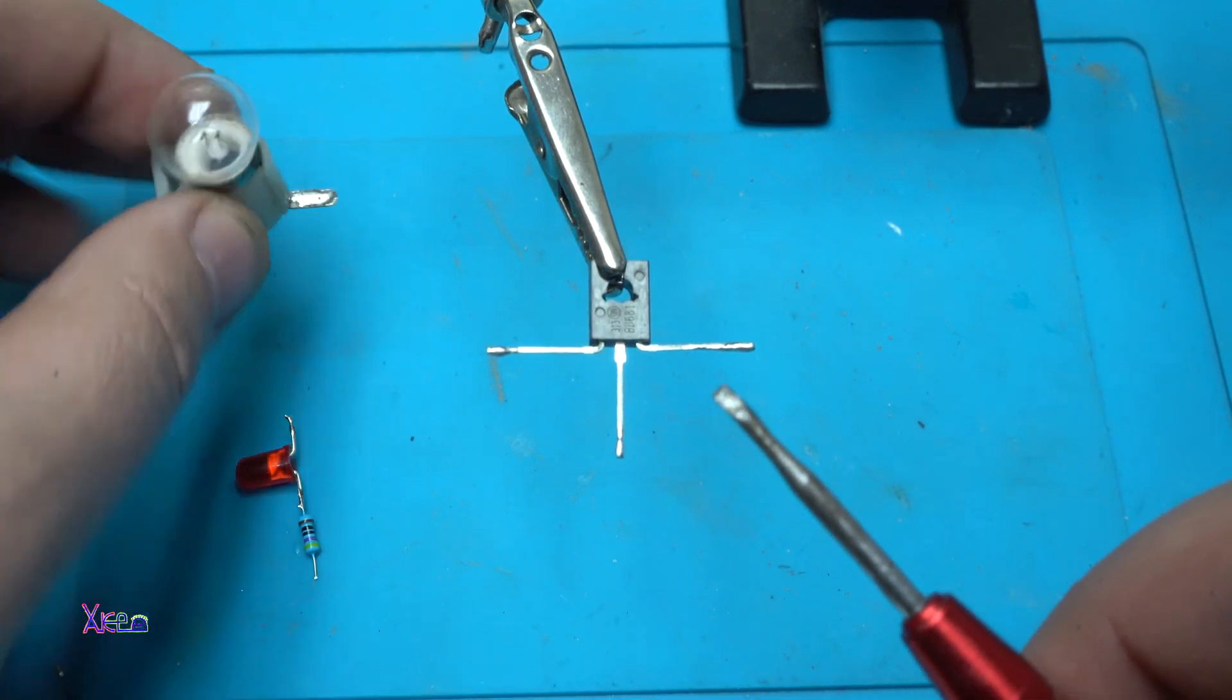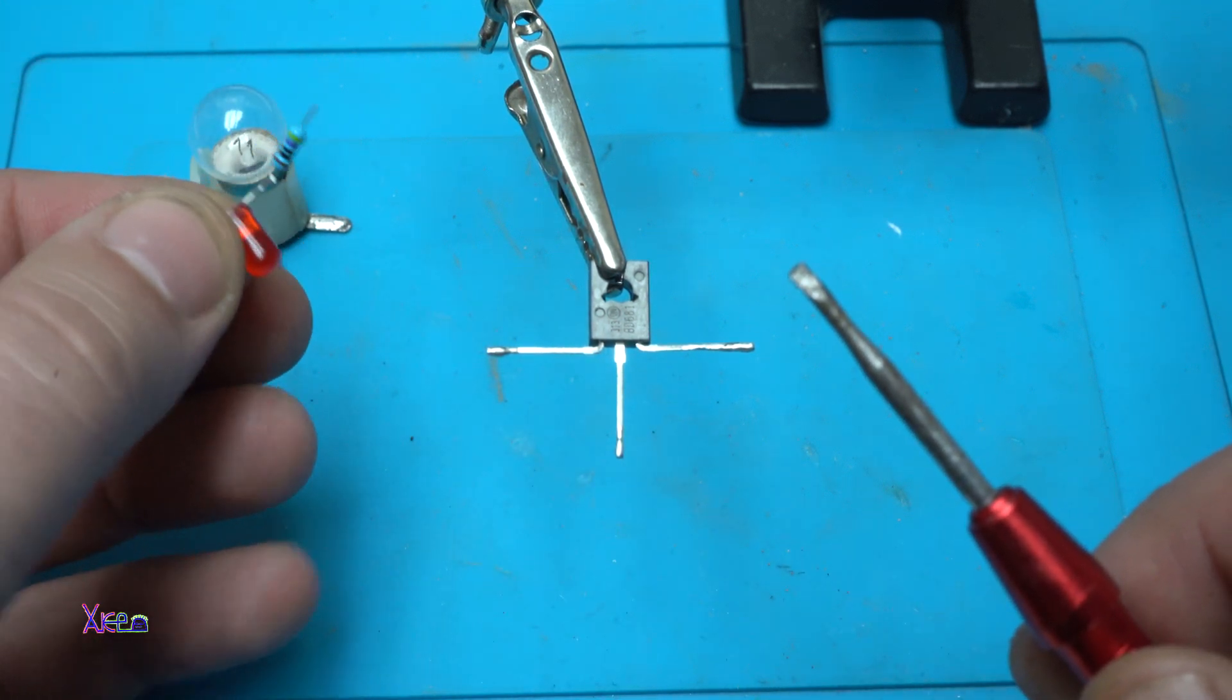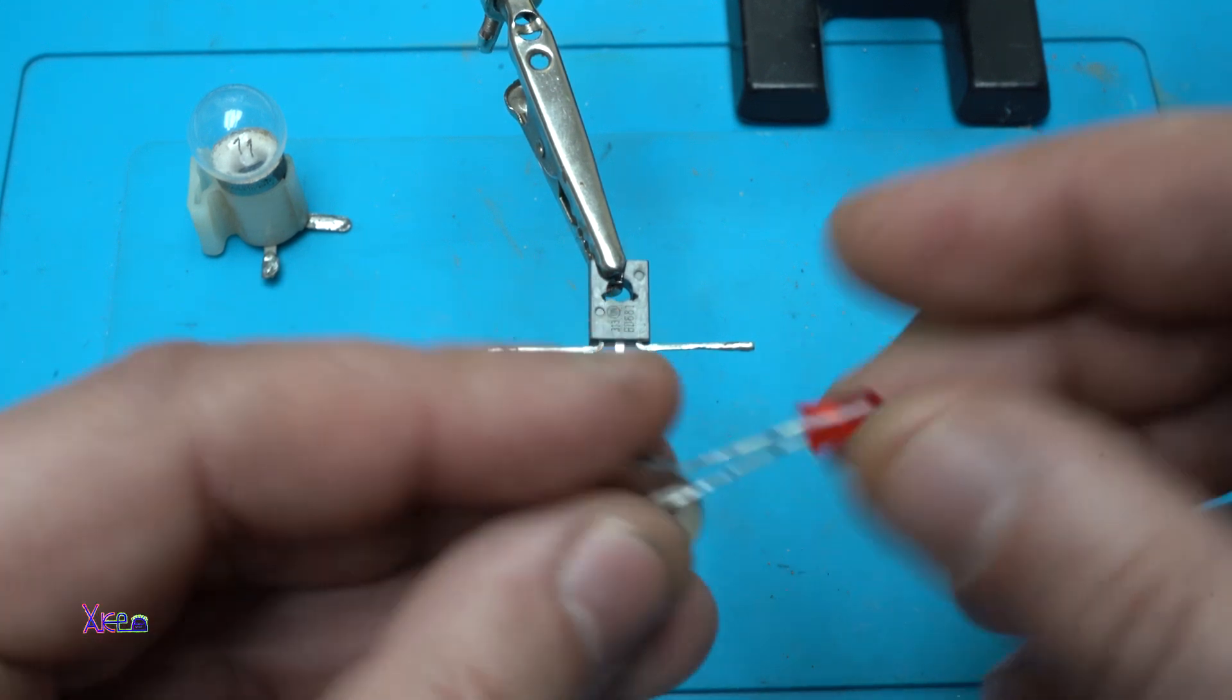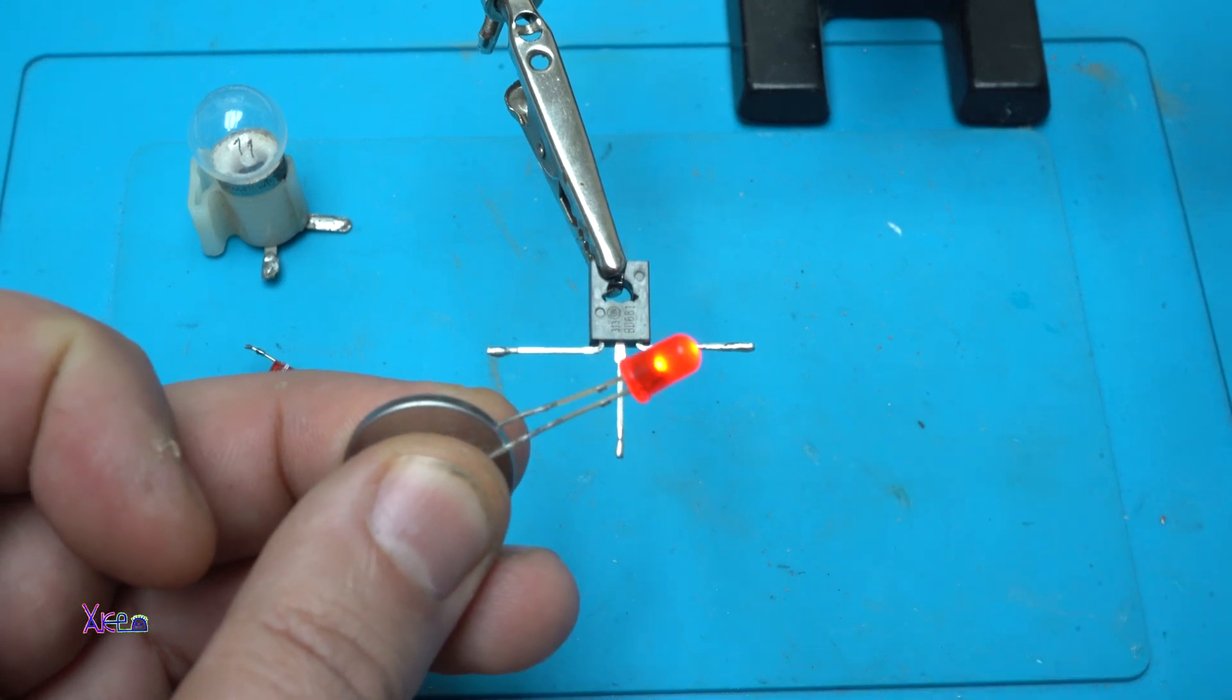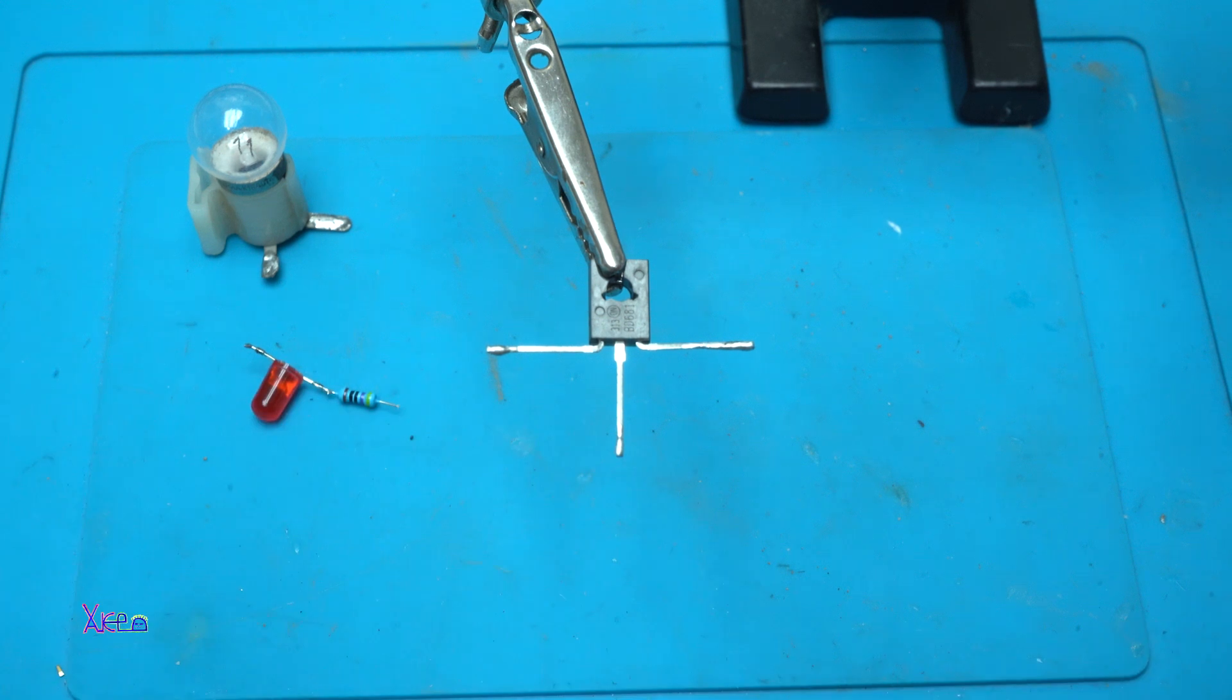To blink this light bulb using an LED as a flasher. I'm using this kind of LED which is a self-blinking LED and you can easily find them on the internet. They are very cheap.